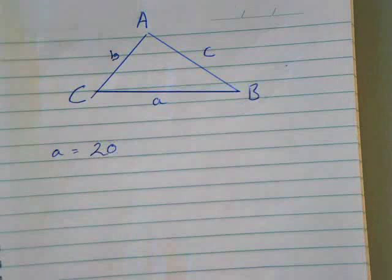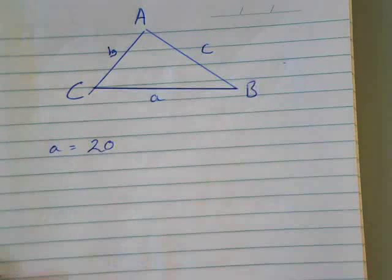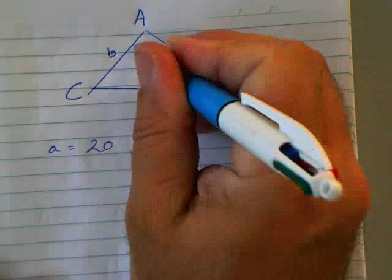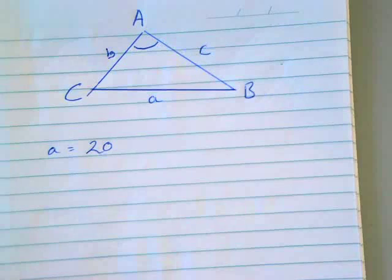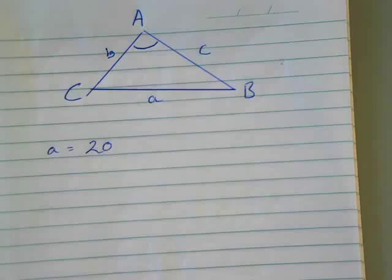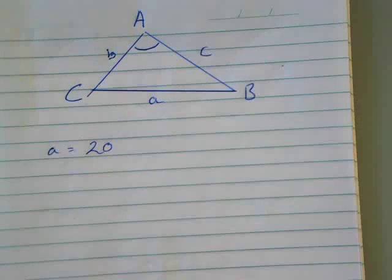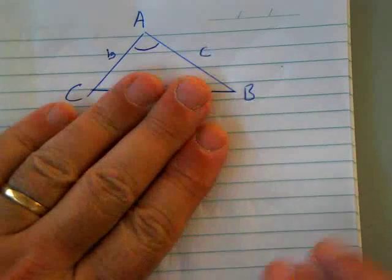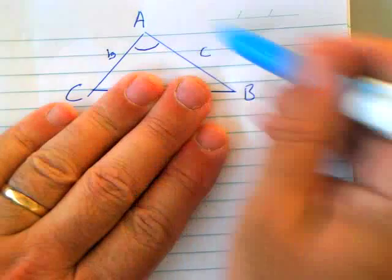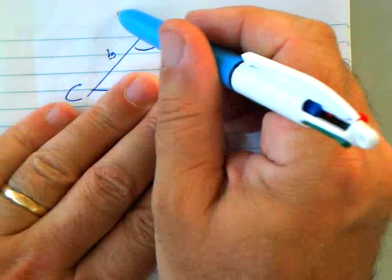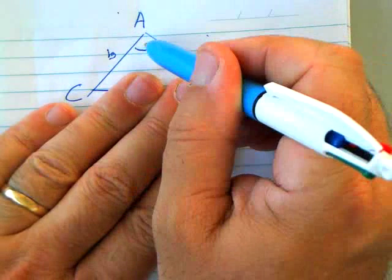Now I also need you to understand the concept of flanking sides. If I want this angle here, which two are the flanking sides? B and C, because if I remove that I've still got the angle.